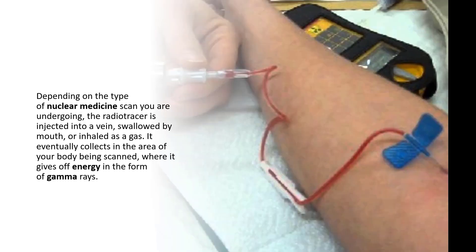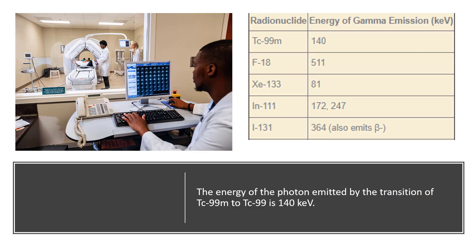Depending on the type of nuclear medicine scan the patient is receiving, the radiotracer is injected into a vein, swallowed by mouth, or inhaled as a gas. It eventually collects in the area of the body being scanned, where it gives off energy in the form of gamma rays. Each radionuclide emits its own gamma energy and has an average energy associated with it, or keV.